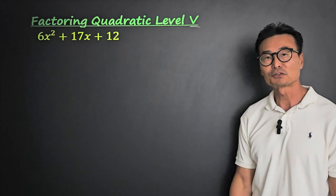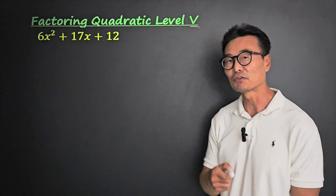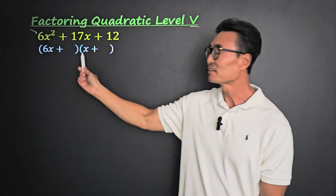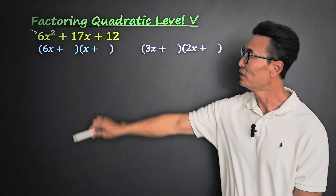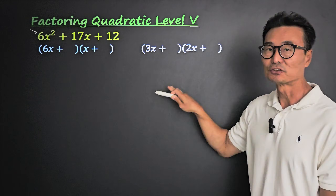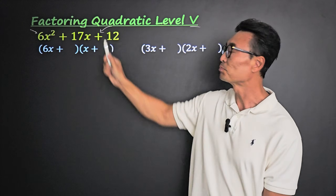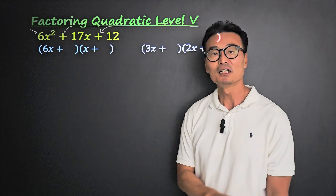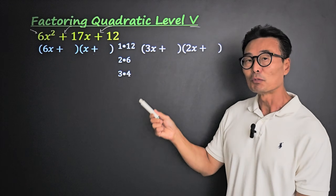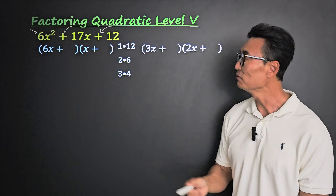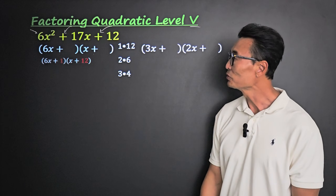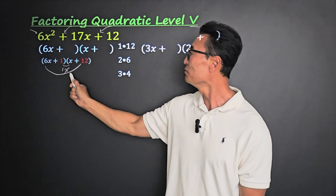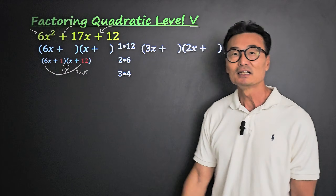Here's level 5. The reason this is level 5 is because of the coefficient 6 in front of x squared — 6 can come from 6 times 1 or 3 times 2, so we have to consider all those cases. The signs are the same and both positive since c is positive. The pairs that multiply to 12 are 1 and 12, 2 and 6, and 3 and 4. Trying 6x and x with 1 and 12: inner product is 1x, outer is 6 times 12 = 72x — not 17x.